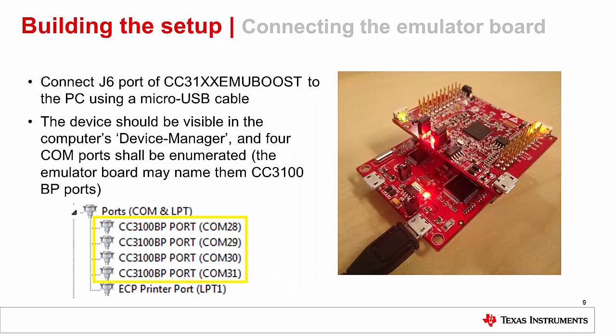To power the platforms, connect the J6 port of the CC31XX emulation board to the Windows PC using a micro USB cable. If the drivers were properly installed during the SDK installation, the PC should recognize and list the connected devices in the device manager as shown. Your boards are ready to be programmed.